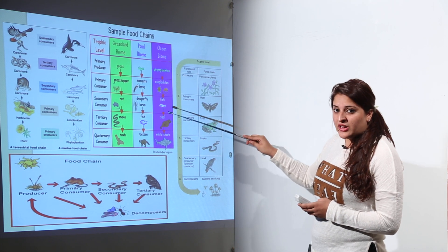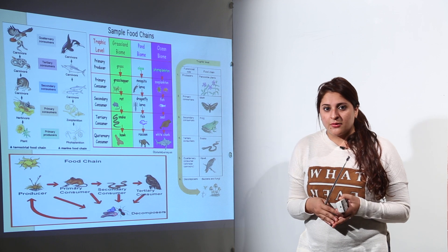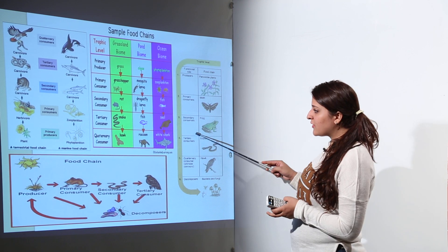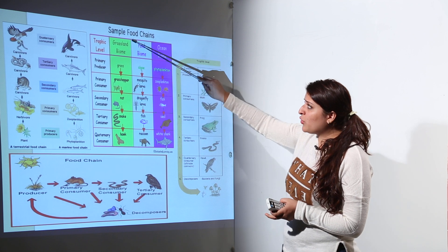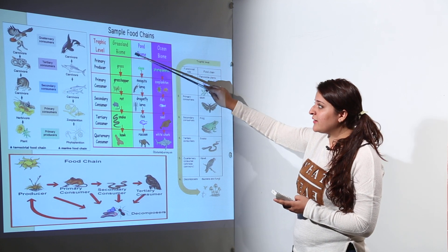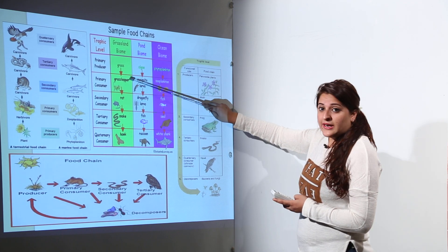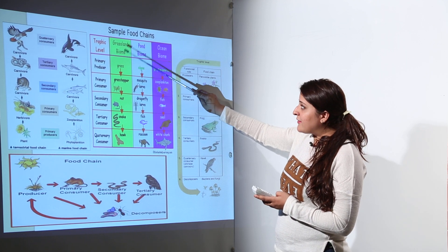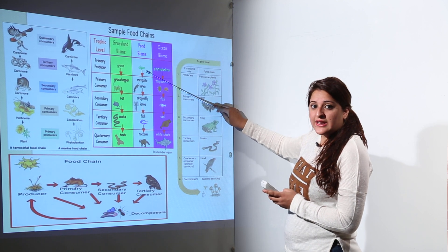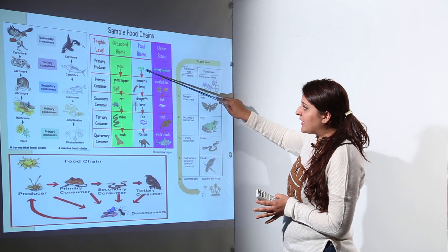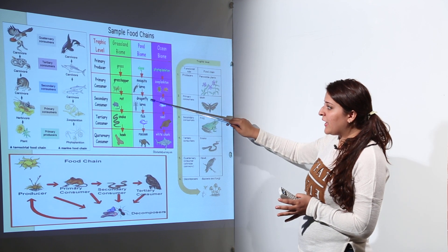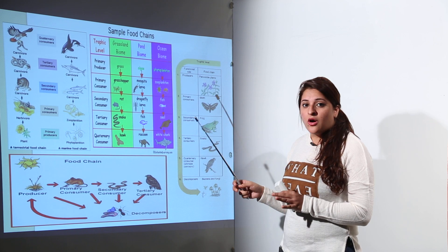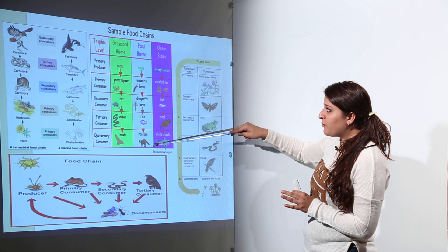These are examples of food chains in different types of ecosystems — terrestrial, pond, and marine ecosystems. In a grassland biome: grass is eaten by a grasshopper, grasshopper by a rat, rat by a snake, and snake by a hawk. In a pond ecosystem, the producers are algae or phytoplankton, eaten by mosquito larvae, then by dragonflies, then by fish, and then by larger fishes or raccoons.